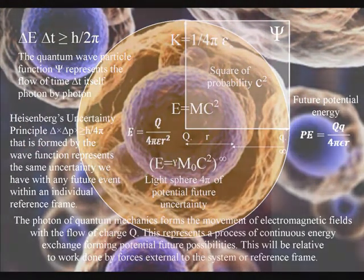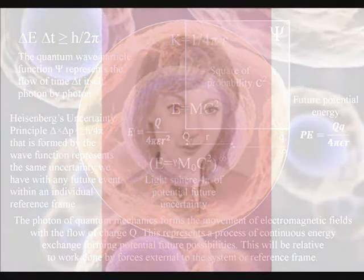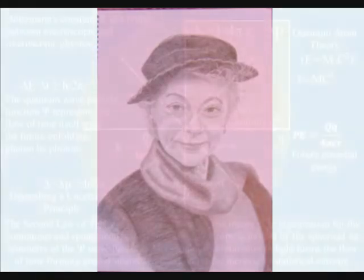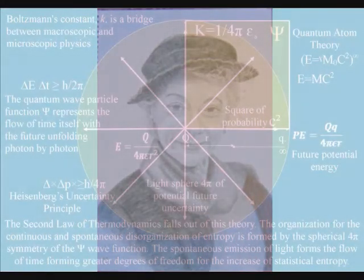The greatest effect this process of continuous energy exchange has on us is the ageing process, with photon energy from the sun cascading down, forming greater degrees of freedom, for the continuous increase in entropy, or disorganisation.